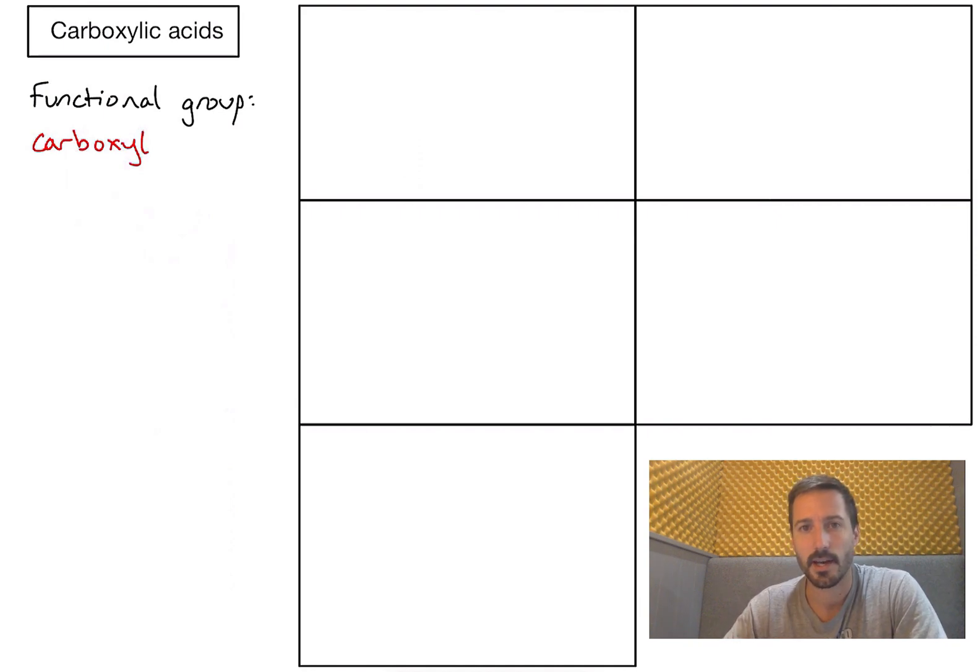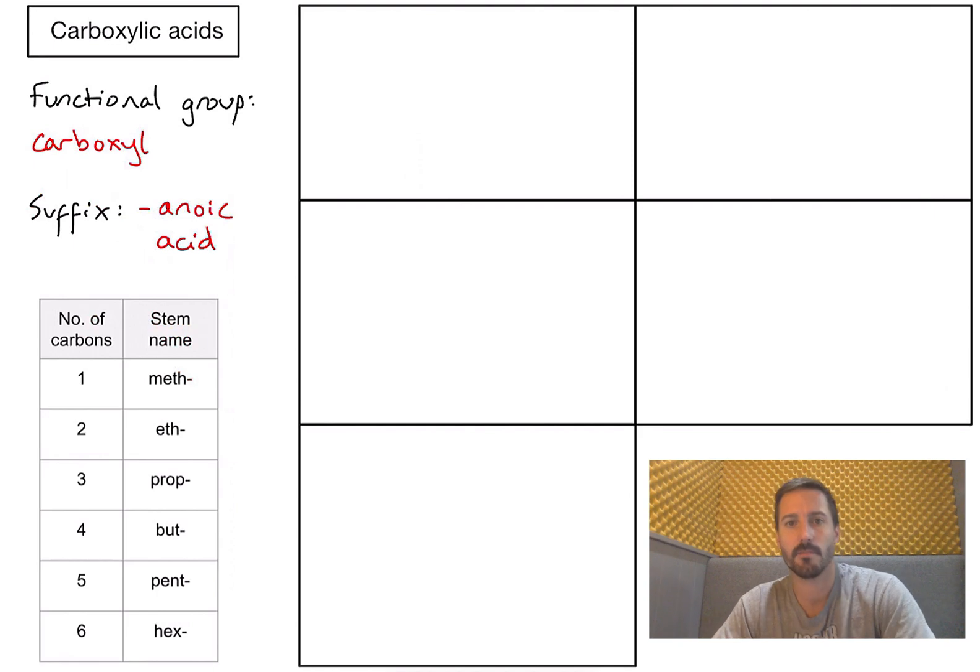The key thing to know about naming carboxylic acids is that the suffix, or the end part of the name, is going to be anoic acid. For reference, let's include our table of stem names that tell us about the number of carbons in my longest carbon chain in the compound.